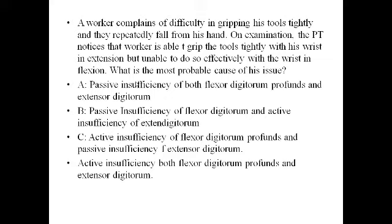Option A: passive insufficiency of both flexor digitorum profundus and extensor digitorum. Option B: passive insufficiency of flexor digitorum and active insufficiency of extensor digitorum. Option C: active insufficiency of flexor digitorum profundus and passive insufficiency of extensor digitorum. Option D: active insufficiency of both flexor digitorum profundus and extensor digitorum.